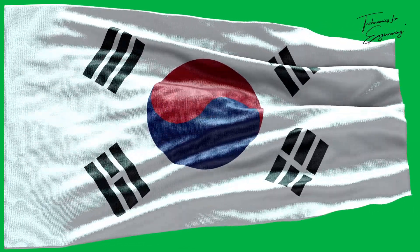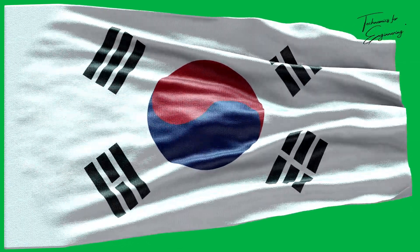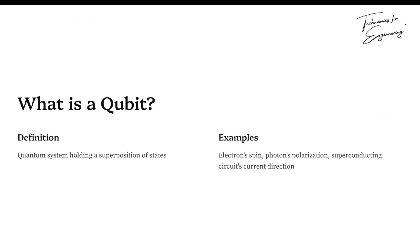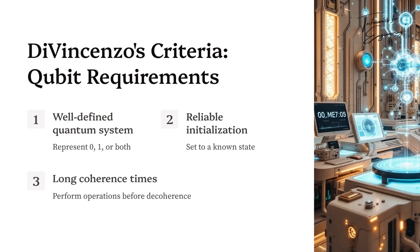But what exactly is a qubit? Unlike a classical bit, a qubit is a quantum system — an electron's spin, a photon's polarization, a superconducting circuit's current direction — that can hold a superposition of states. To function as a qubit, certain stringent conditions must be met, known as DiVincenzo's criteria.